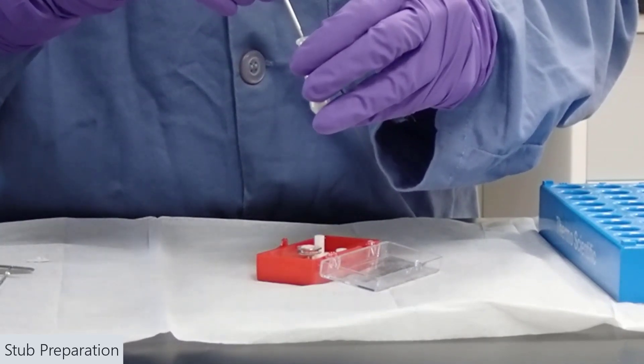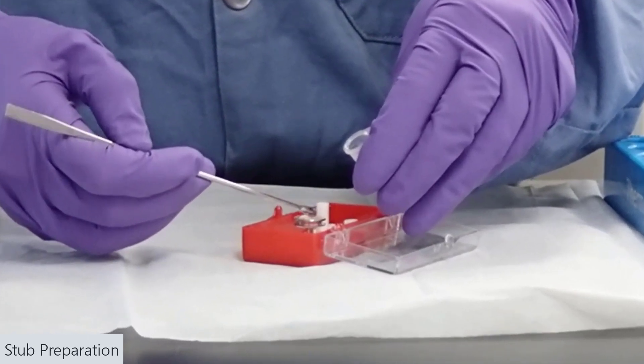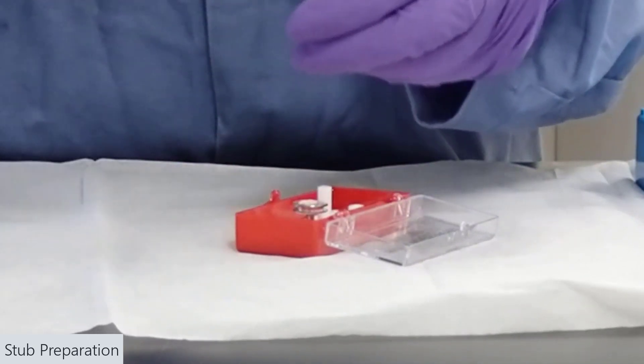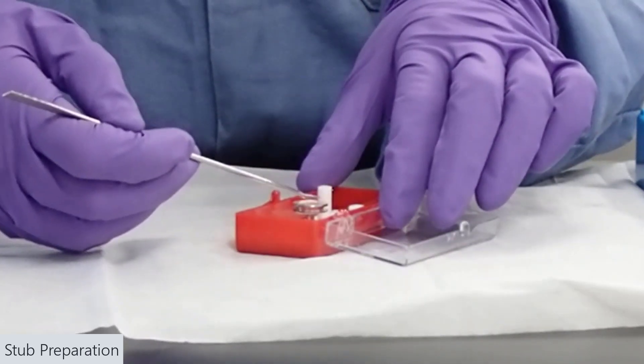Ideally, you could also work on multiple stubs at once, putting variable amounts of powder—some with more, some with less. That way, you ensure that you have at least one sample that has a good distribution of material.